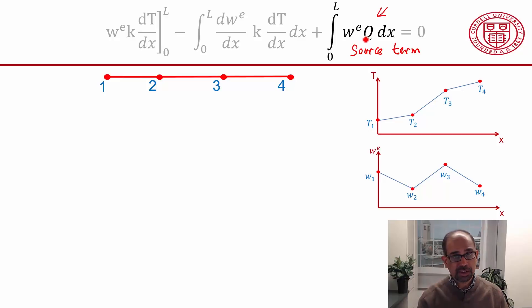In structural mechanics, this could be gravity, so that would be a source term. Or in the wind turbine blade example that we will do, the centripetal acceleration is going to be applied in this way. It will be a source term.